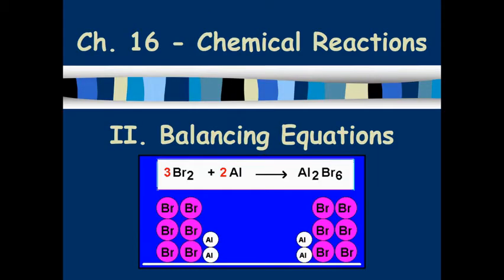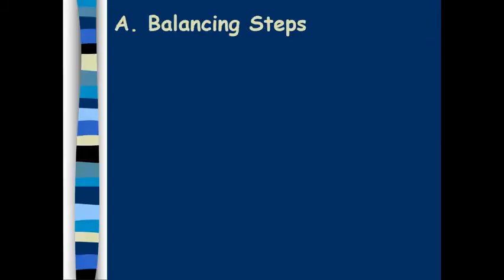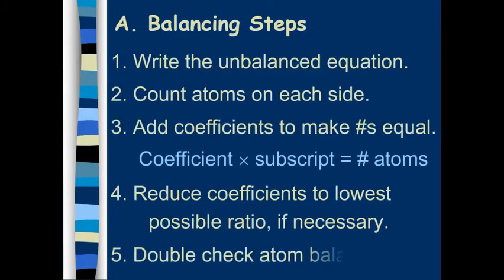Okay, so now I'm going to go over a little bit of balancing reactions. We're going to go through an example and get some step-by-step instructions. Number one, it says write the unbalanced equation. That's usually going to be done for you. You are going to number two, count the atoms on each side. That's why we had that counting atoms practice at the end of our last unit.